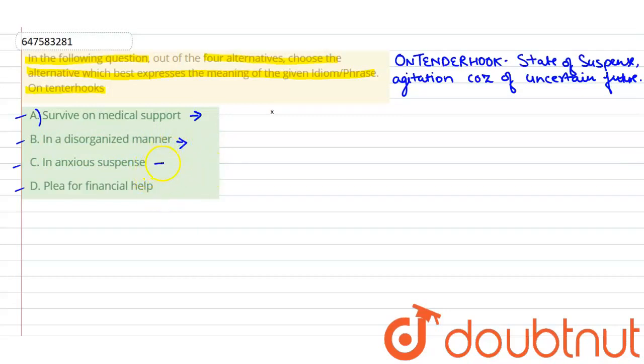Third is, in anxious suspense. Now, we have two words here, which are showing some similarity. Anxious means, we are not aware. We have a feeling of worry. Anxious means,